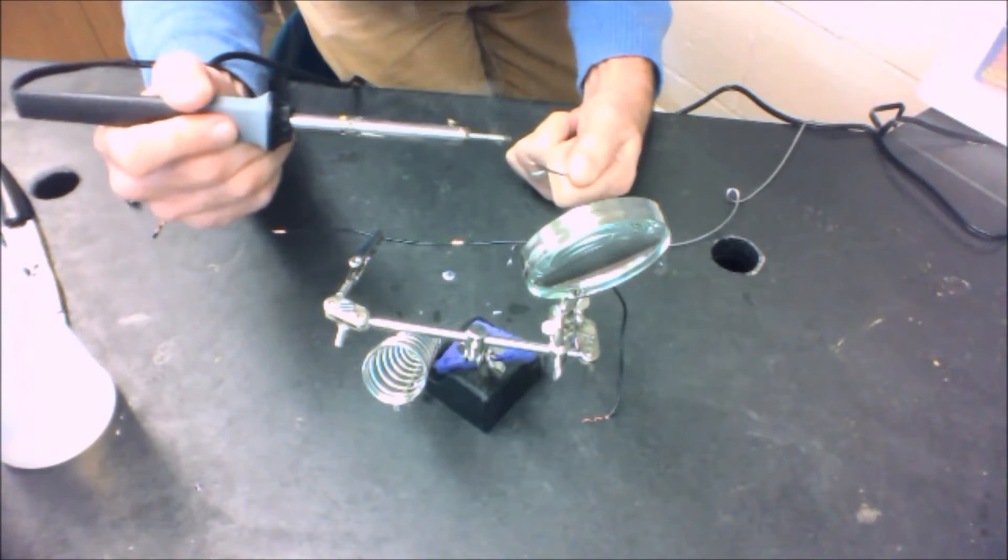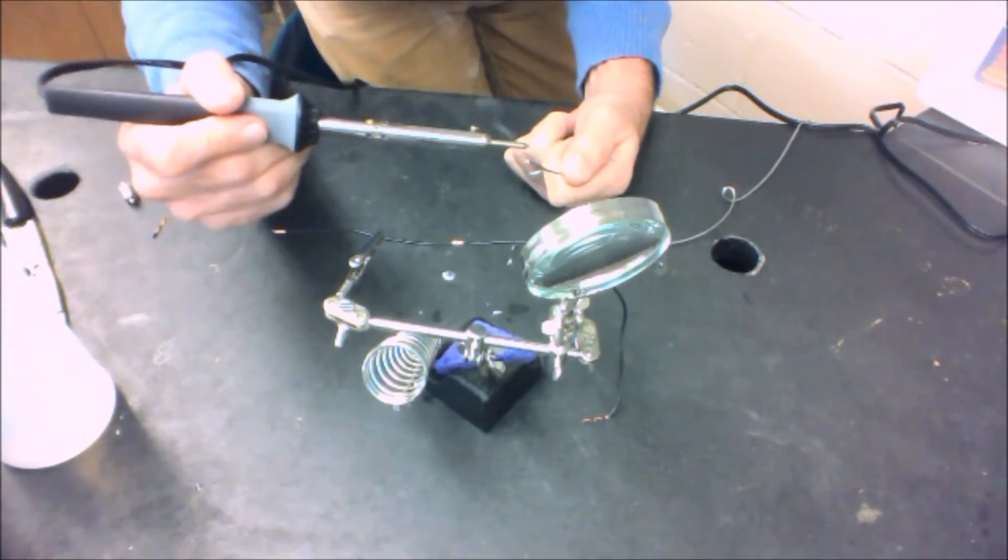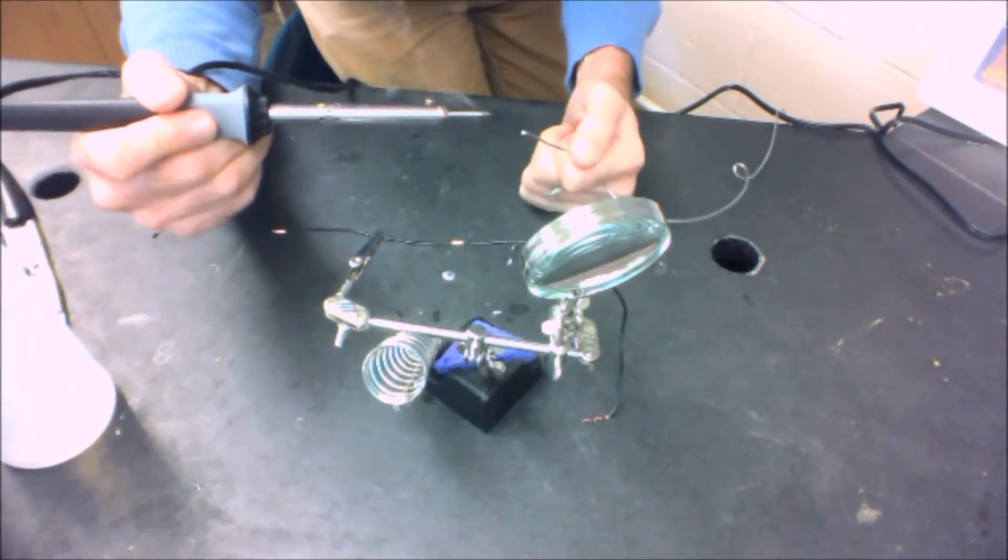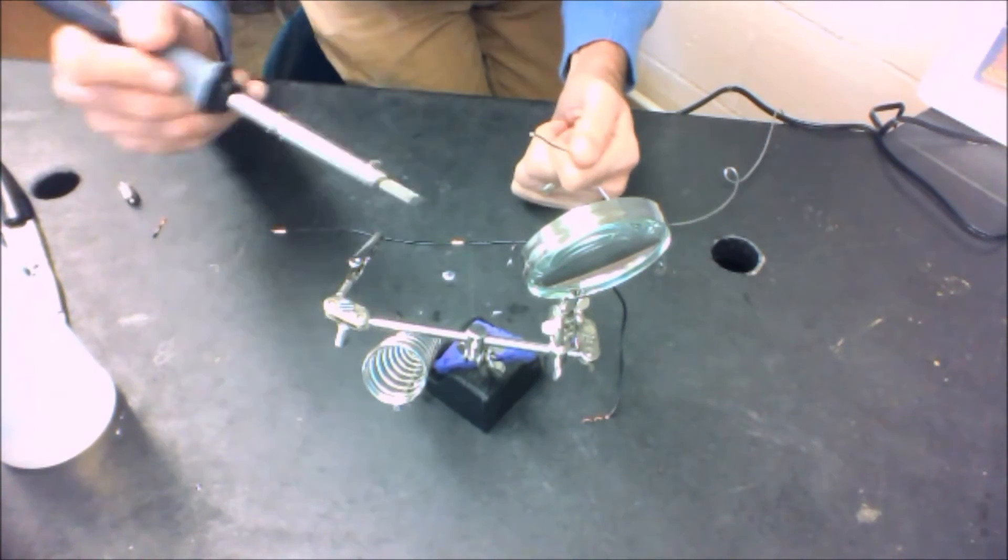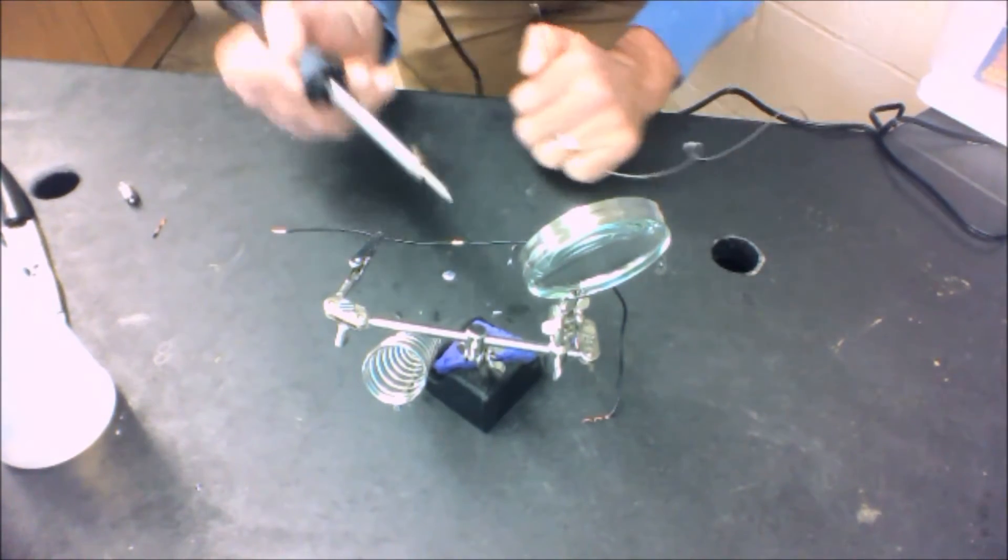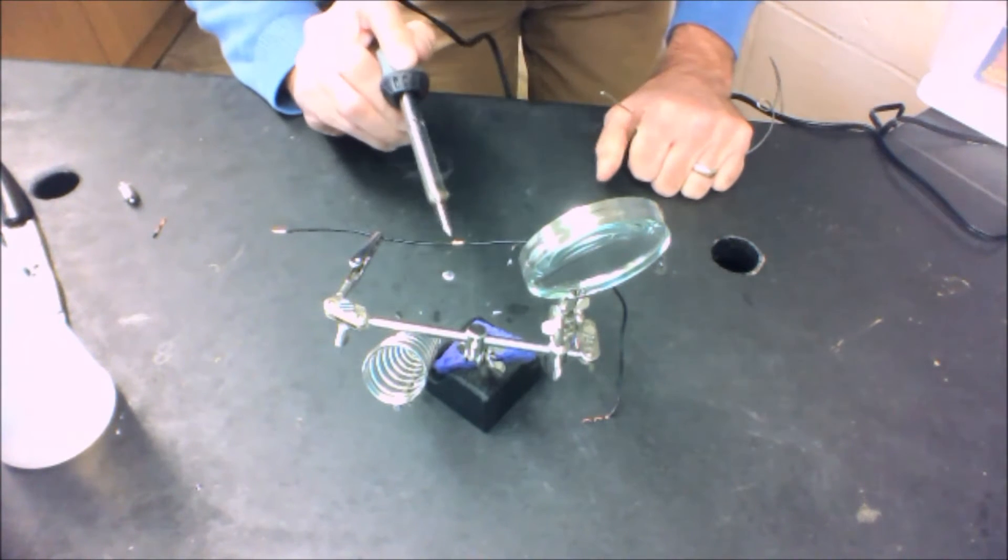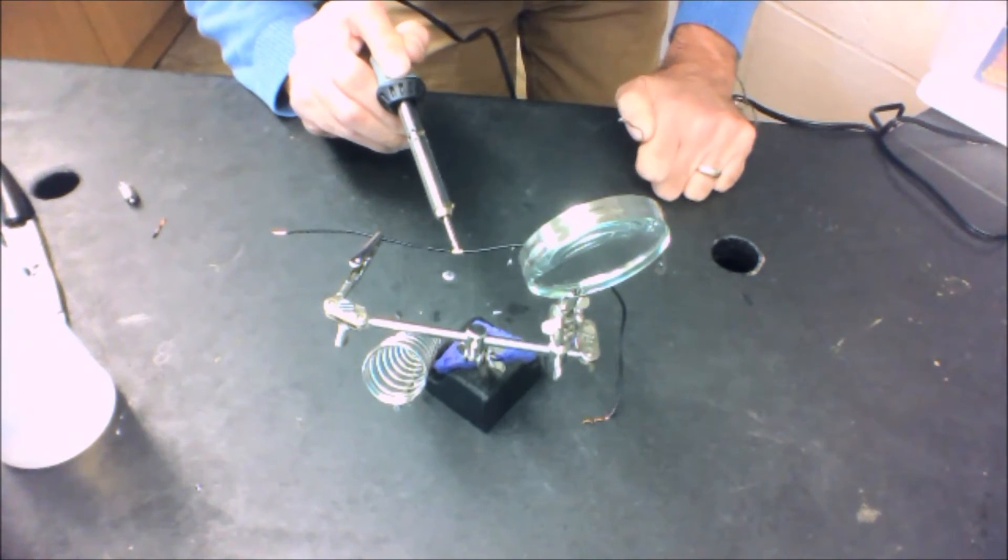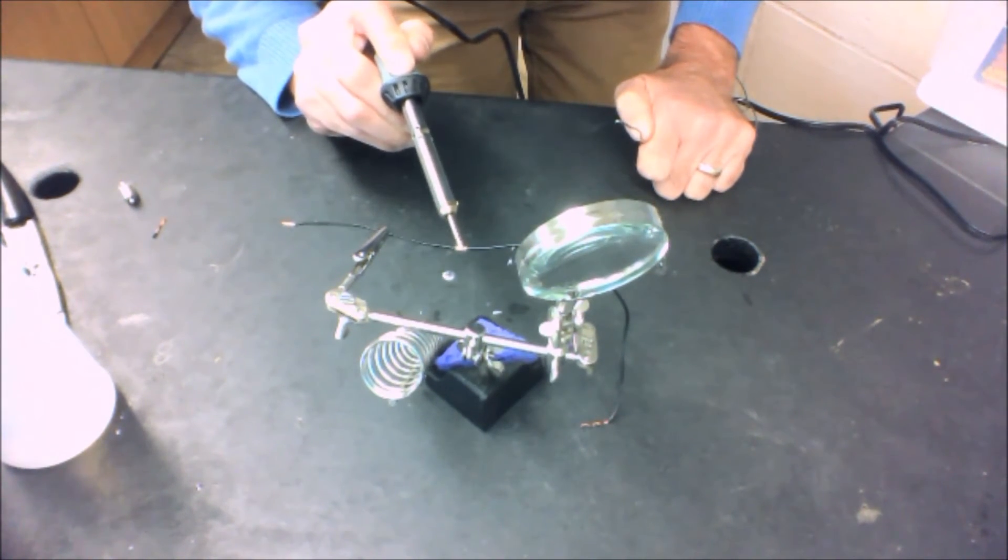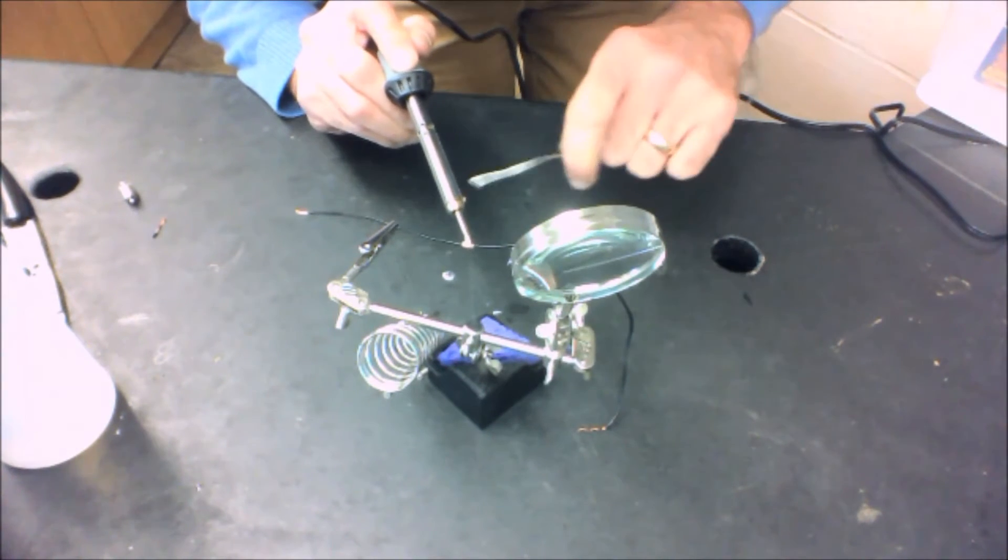It's called rosin. So actually, it's rosin-filled solder. So in the middle of this wire, there's actually this material that readily burns off. So that will eventually start to burn off. I just want to heat my part here and just sort of hold it in there.